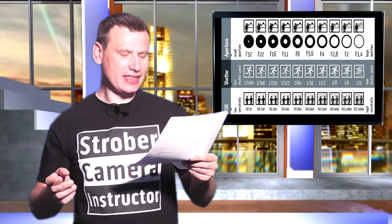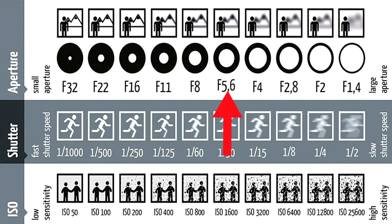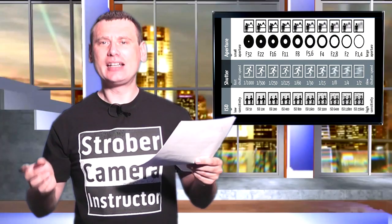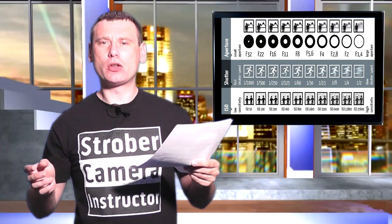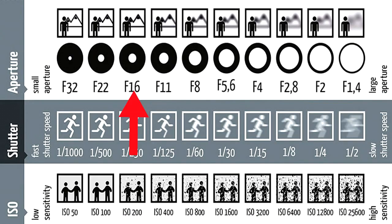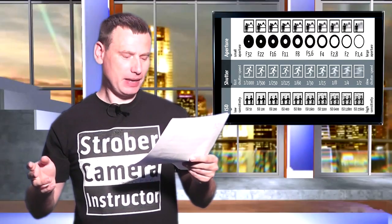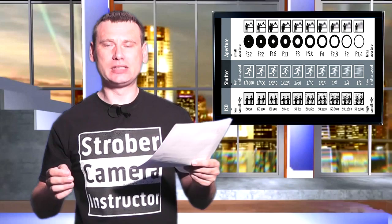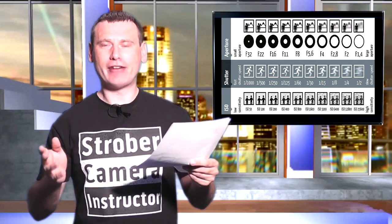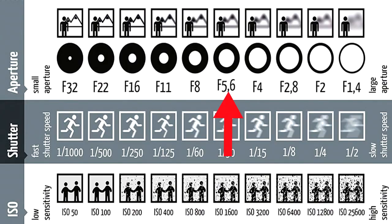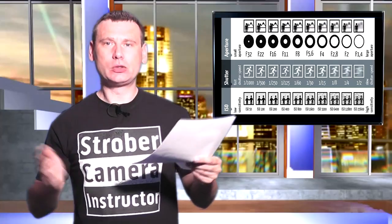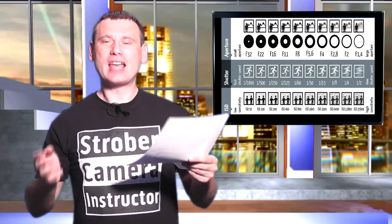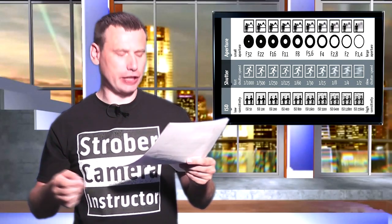Now let's say that we're on an aperture of f5.6 and we want to move down to f16. This means that we have moved down three stops. Again, f5.6, then we go one, two, three. That is stops being used with aperture.